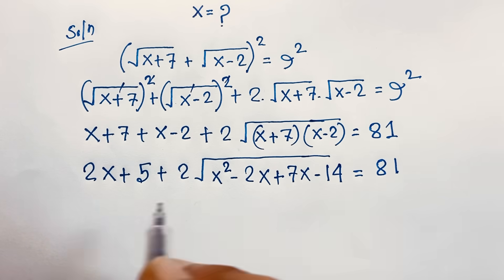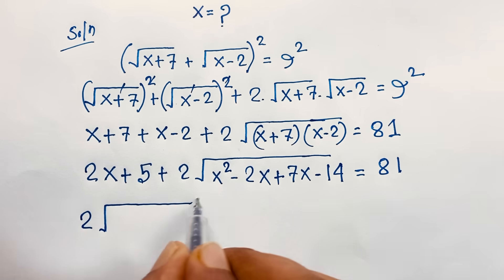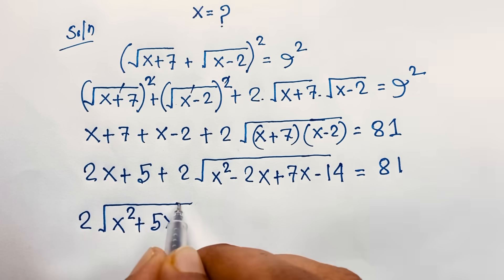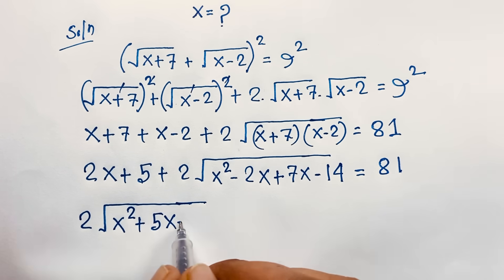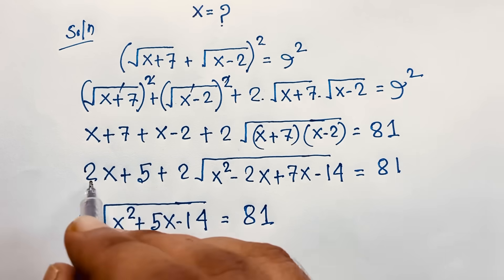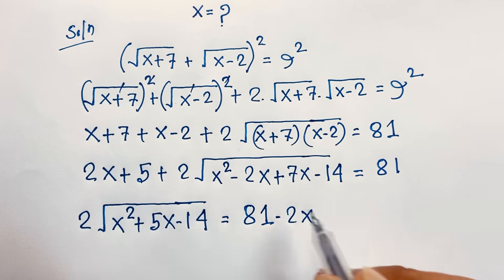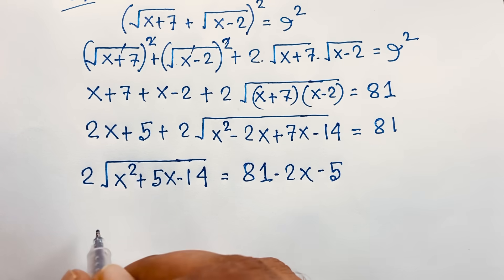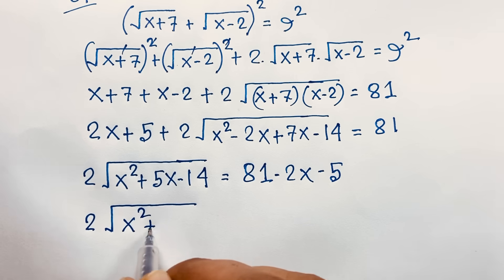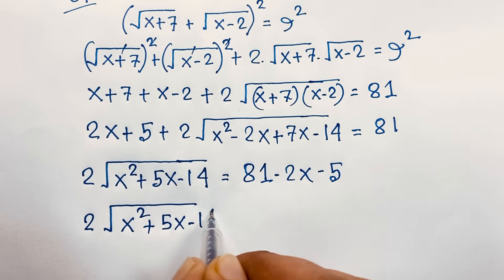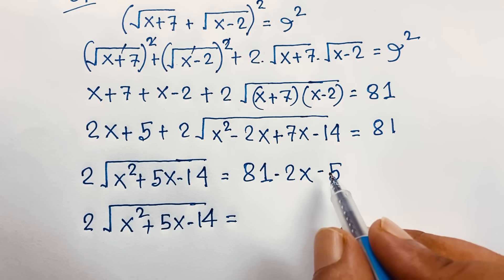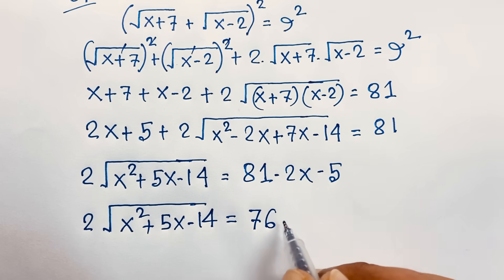At this moment, the expression becomes: 2 times square root of (x squared plus 5x minus 14), where 7x minus 2x gives positive 5x. Moving 2x and 5 to the right side gives negative 2x and negative 5. So we have 2 times square root of (x squared plus 5x minus 14) equals 81 minus 5 minus 2x, which is 76 minus 2x.